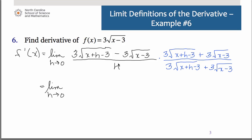So the conjugate we will multiply by will be 3 square root x plus h minus 3 plus 3 square root of x minus 3. Across the numerator, we'll go ahead and multiply that out. The denominator, we shall just leave as it is. So multiplying this out, we have the 3 times the 3 in the numerator. So that makes 9 times the quantity x plus h minus 3.